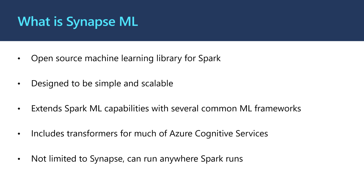As part of this, it includes transformers to execute calls to Azure Cognitive Services which are run outside of the Synapse platform, but it makes it easier to use. The most important thing to call out is that even though it's called Synapse ML, it's actually not limited to running just in Synapse. This will run anywhere where Spark runs — this could be an HDInsight cluster, a Databricks cluster, or even in a Docker container. So anywhere where you can install and execute the Spark libraries, you can run Synapse ML.